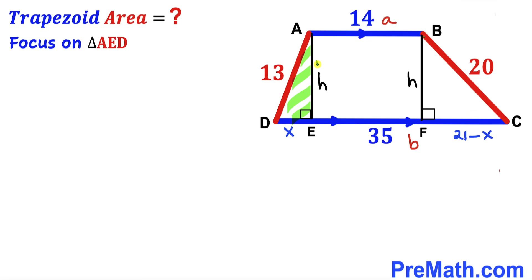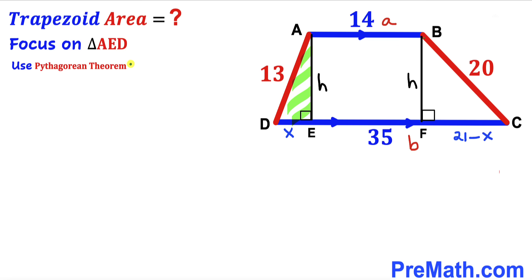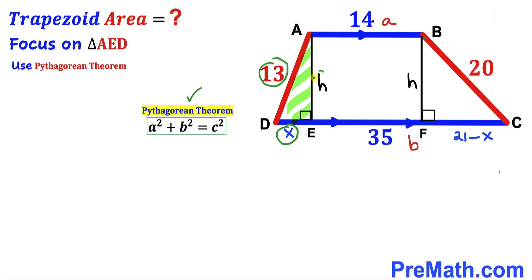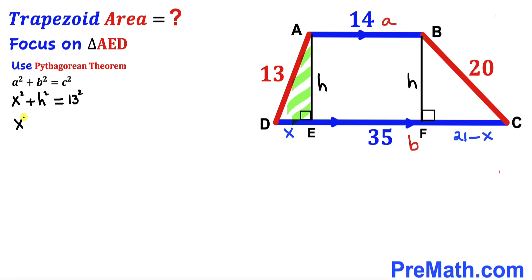Now we focus on right triangle AED and apply the Pythagorean theorem: a² + b² = c². Here the hypotenuse is 13, and the two legs are x and h. Filling in: x² + h² = 13², which gives x² + h² = 169. Moving x² to the other side: h² = 169 − x². I'll label this as equation 1.